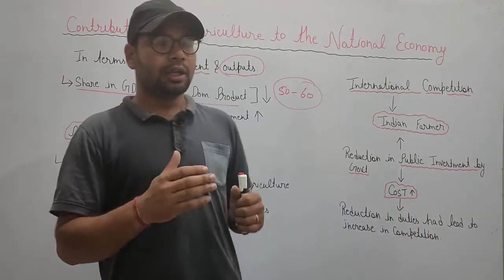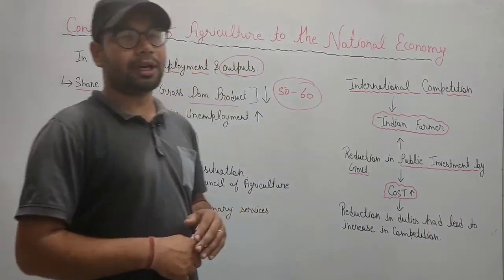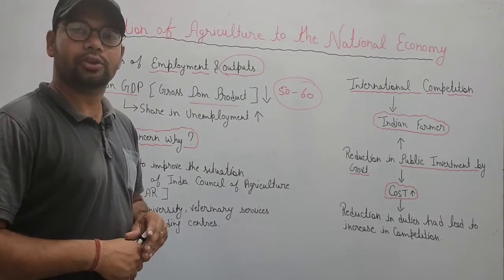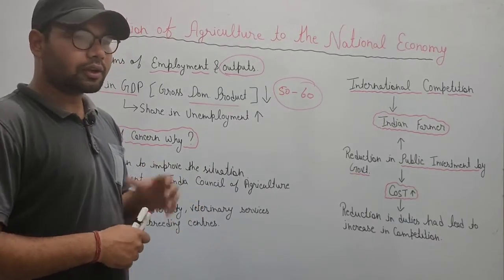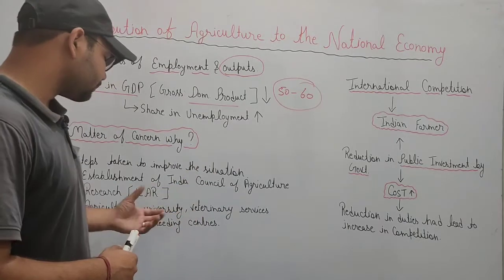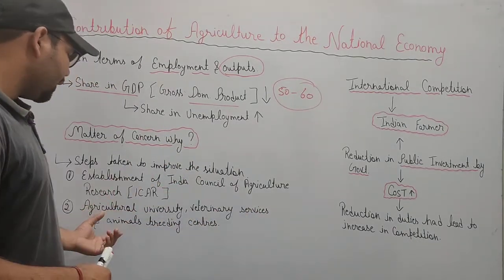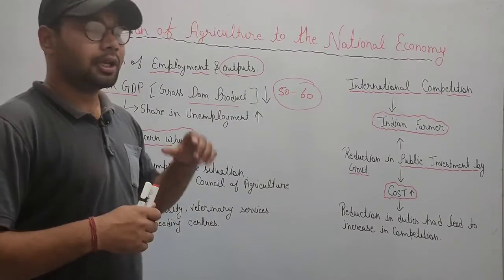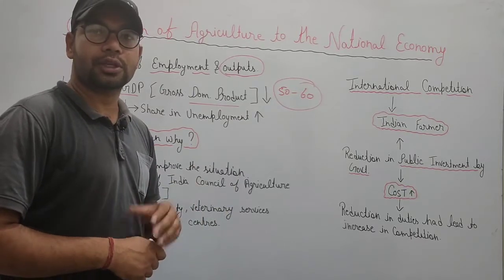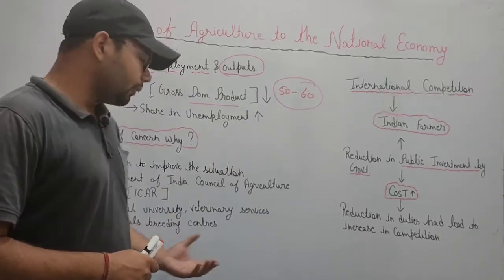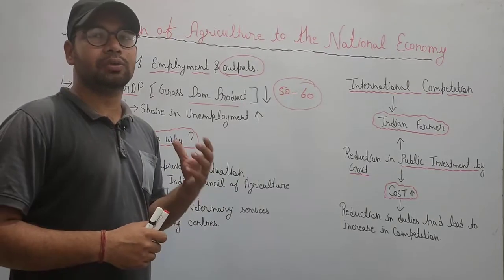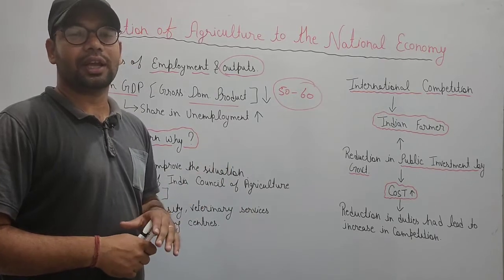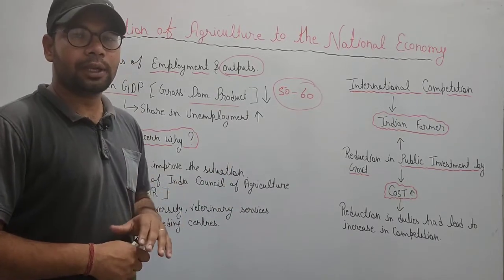Veterinary services were improved because, along with the Green Revolution, the White Revolution was also emphasized. Focus was placed on quality products. Veterinary services were improved and animal breeding centers were opened. As a result, milk production quality improved, good quality cows and buffaloes became available, and the White Revolution also increased.